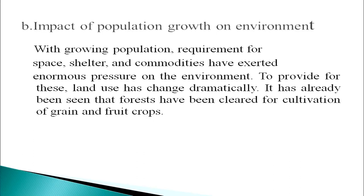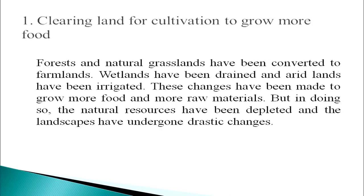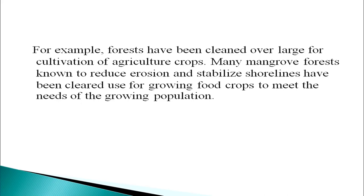With a growing population, requirements for space, shelter and commodities have exerted enormous pressure on the environment. To provide for these, land use has changed dramatically. Forests have been cleared for cultivation of grain and fruit crops. Forests and natural grasslands have been converted to farmlands, wetlands have been drained and arid lands have been irrigated. These changes have been made to grow more food and raw materials, but in doing so the natural resources have been depleted and landscapes have undergone drastic changes. Many mangrove forests, known to reduce erosion and stabilize shorelines, have been cleared and used for growing food crops to meet the needs of the growing population.